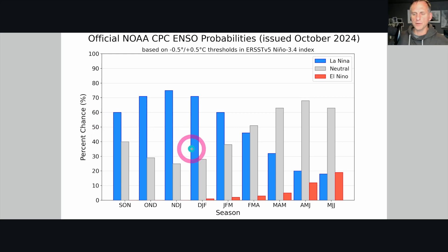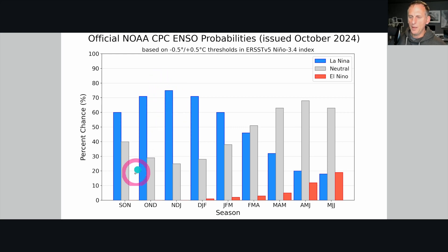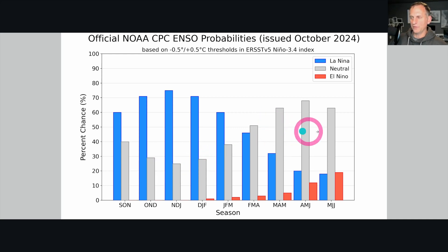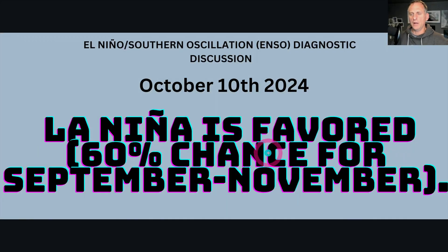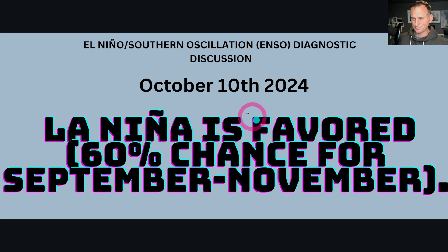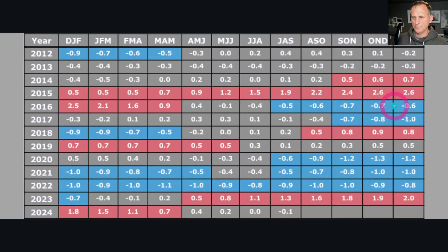Looking at the probabilities through November, December, and January, we're at about 75% chance of La Niña, but neutral is still there. Scrolling into next year, it looks like we're headed towards neutral, and then El Niño starts to creep up a little, with kind of equal odds between La Niña and El Niño. La Niña is favored through September-November, and if not by then, probably by December. This was updated October 10th.